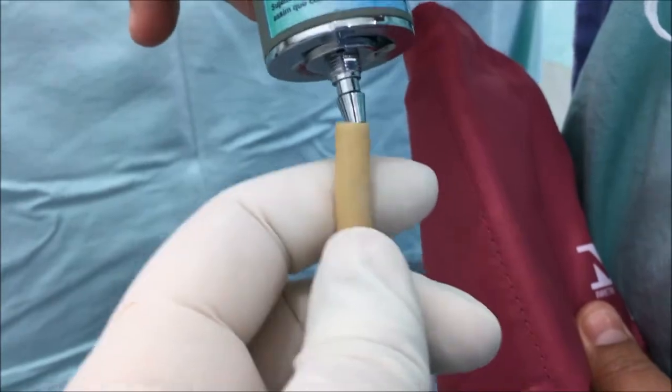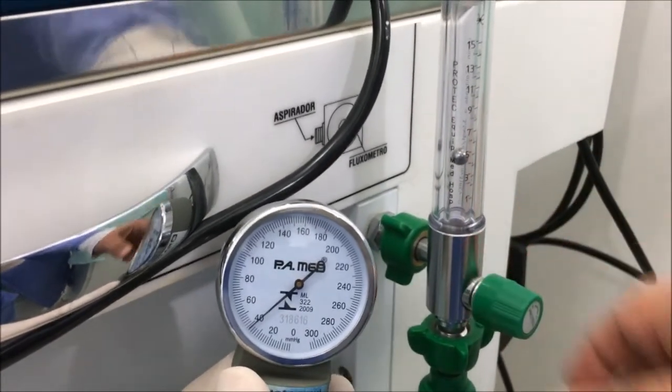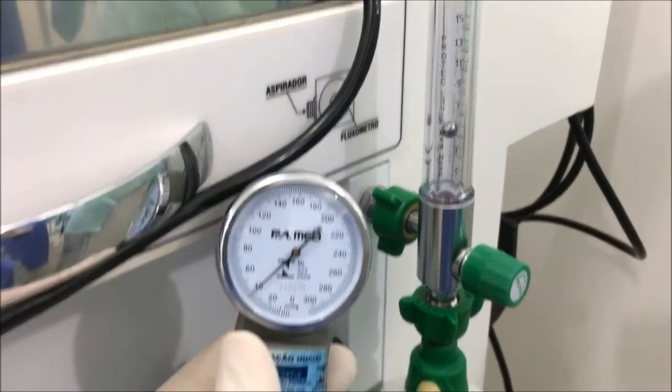We connect it to the tubing and here we use the O2 humidifier to adjust the pressure we want as a target.